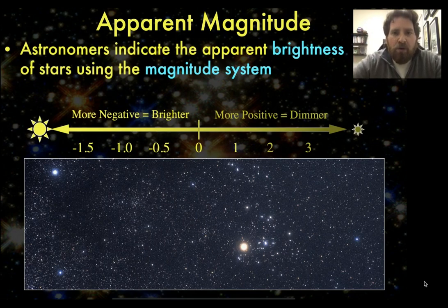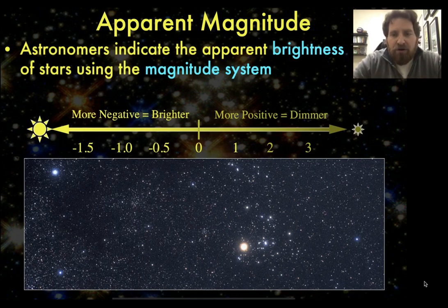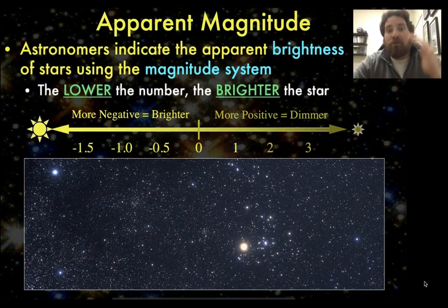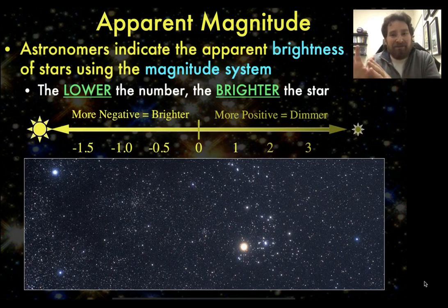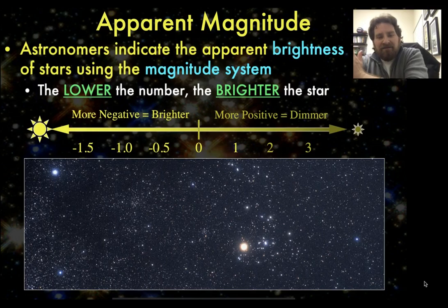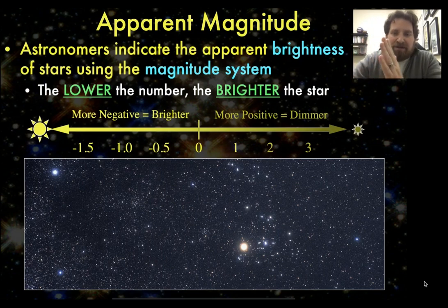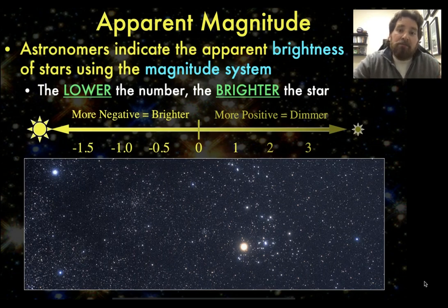The way the magnitude system works is that different numbers represent different brightnesses. The magnitude system is counterintuitive in that the lower the number, the brighter the star. The brightest stars in the sky have the lowest magnitudes, and the dimmest stars have the highest magnitudes. You can think of it as a number line where the more positive the number, the dimmer it is. The magnitude system actually dips below zero into negative numbers, and the more negative the number, the brighter it is.